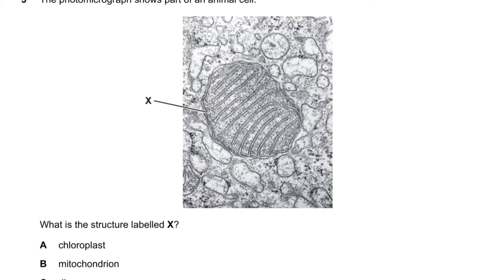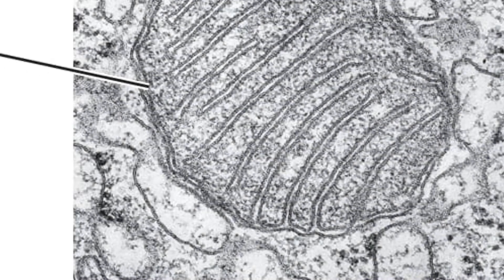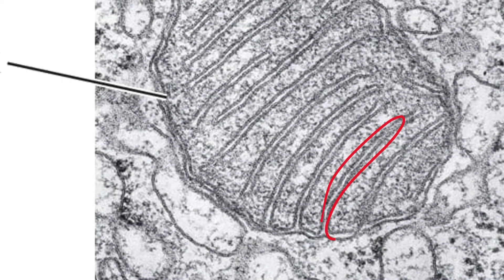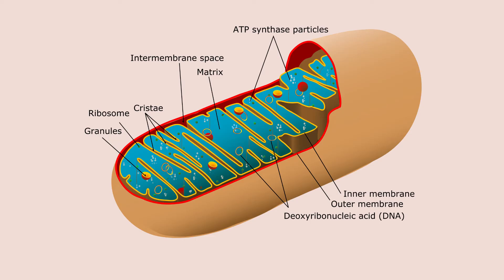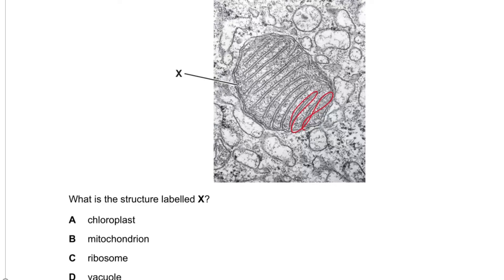Question number three: what's the structure labeled X? If we zoom in you can see that it's like a lot of folds. Anything that's folded that much is the mitochondria.